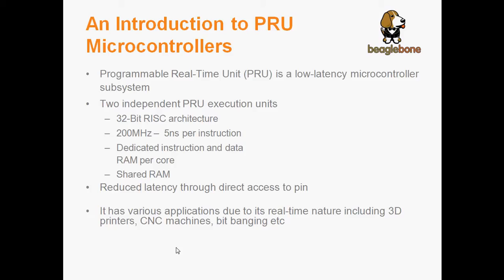Let us look a little more in-depth into the PRU microcontrollers. The Programmable Real-Time Units is a low-latency microcontroller subsystem consisting of two independent 32-bit RISC architecture processors. Each processor has a clock speed of 200 MHz, or 5 ns per instruction. There is dedicated instruction and data RAM per core — 8 KB each — and 12 KB of shared RAM between both cores. There is also reduced latency due to direct pin access, making PRUs very useful in applications such as 3D printers, CNC machines and bit banging.